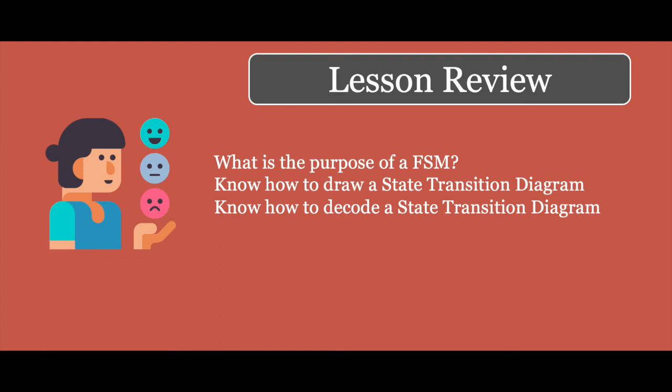That takes us to the end of this session. Hopefully you now know what the purpose of a finite state machine is — it's a mathematical or conceptual model which allows us to map how things might operate in the real world. You know how to draw and decode a state transition diagram, and you know how a state transition table works and can use it to create diagrams and vice versa. See you in the next session.